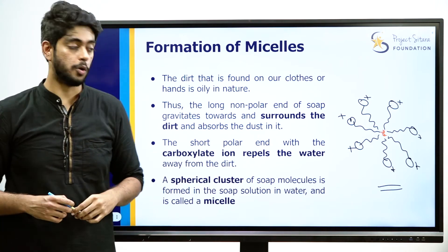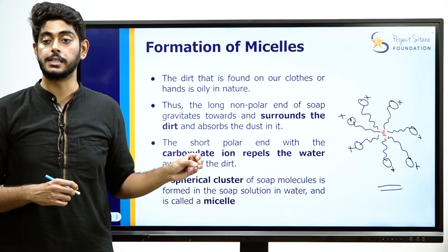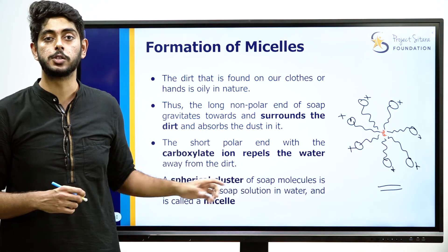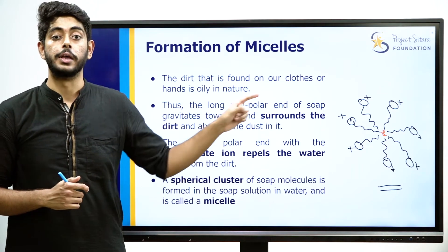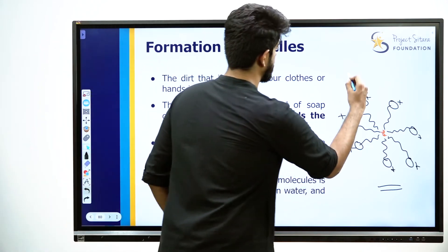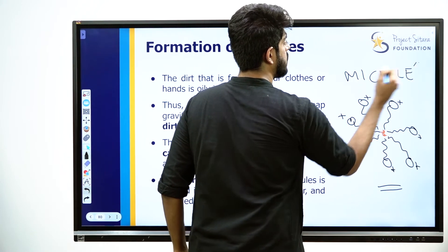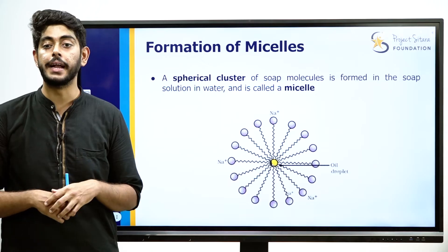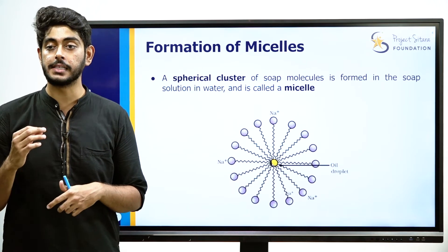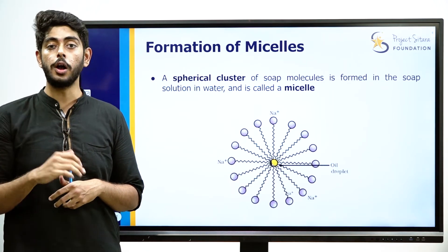A spherical cluster of soap molecules is formed in the soap solution and this is called a micelle. This is how a micelle is formed — a spherical cluster of soap molecules in the soap solution. What is it called? A micelle.